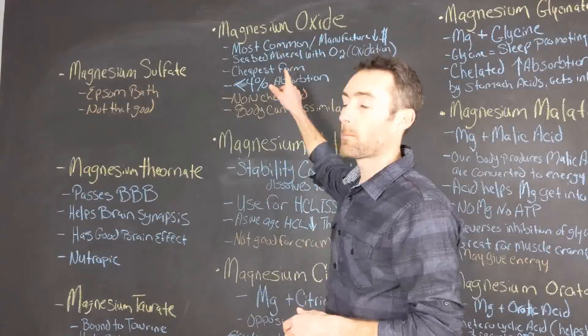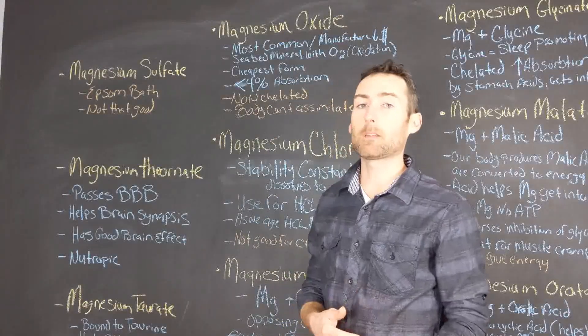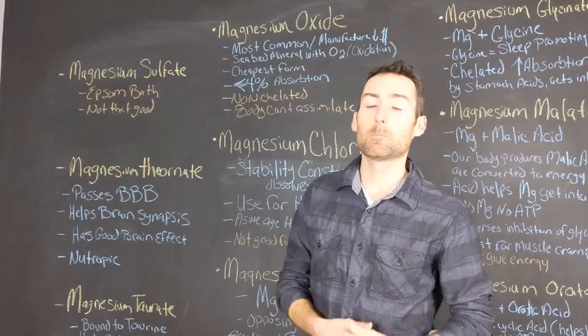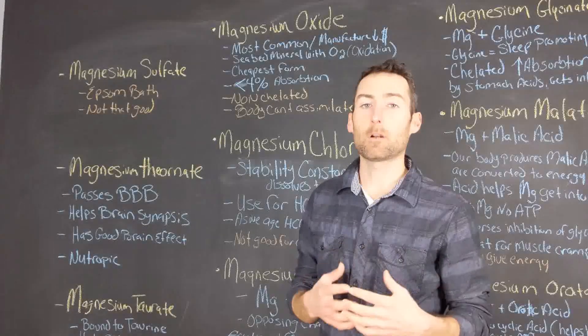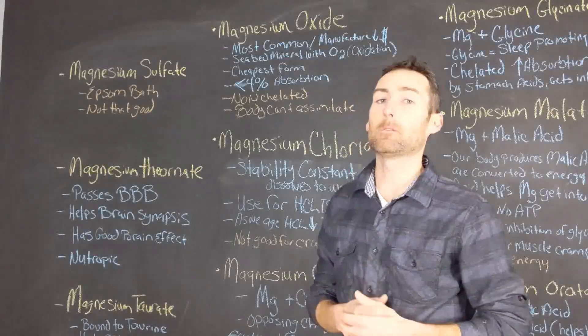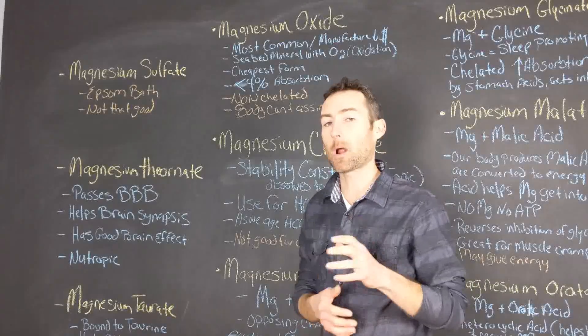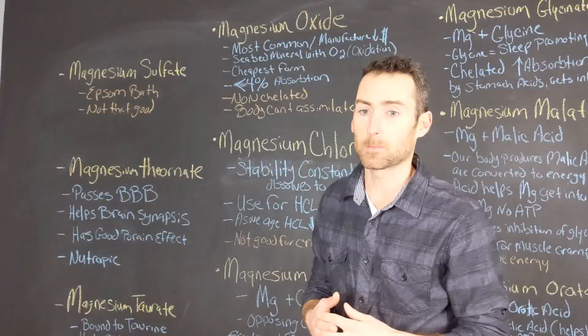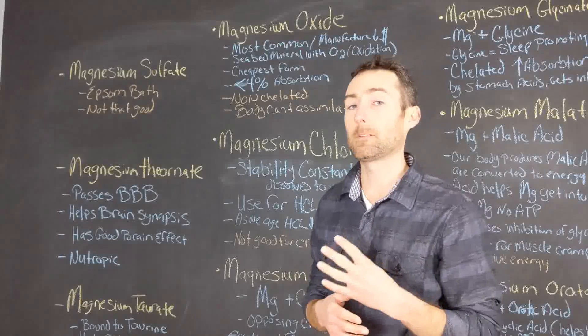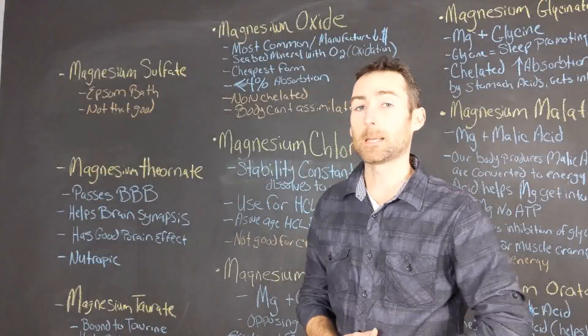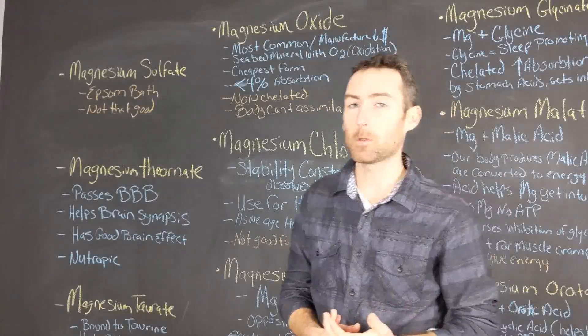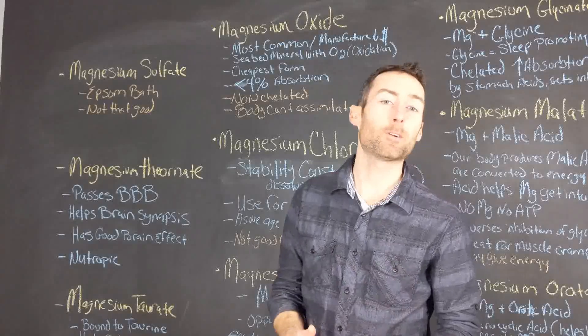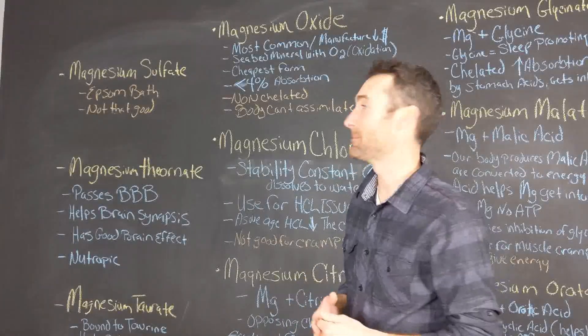This form of magnesium is very cheap, very easy to manufacture. It's in pretty much all multivitamins that are the cheaper multivitamins because it's a very inexpensive and readily available mineral. Now the only problem with magnesium oxide is if you're taking the RDA of 400 milligrams of magnesium, only 4% of that is actually getting absorbed into the body. It's not really that bioavailable. If you're taking 400 milligrams, you expect to get 400 milligrams.